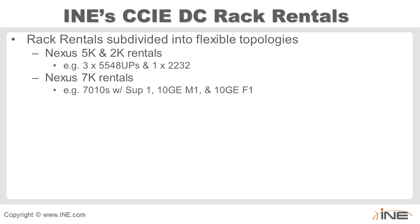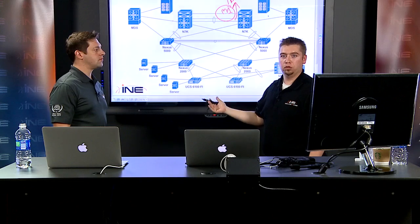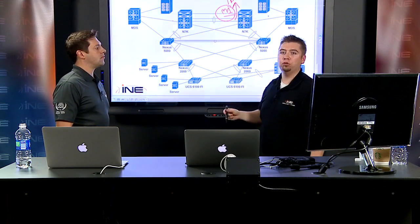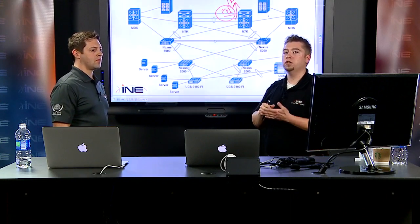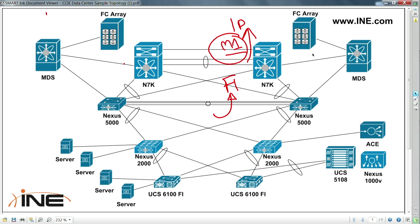The Nexus 7K rack rentals include both M1 and F1 modules, and there is a key difference between them. The M1 modules are your upstream-facing links toward the IP network — they allow Layer 3 routing features. Without an M1 module, you can't do EIGRP, OSPF, BGP, OTV, or any Layer 3 feature. You need this physical card to do that.